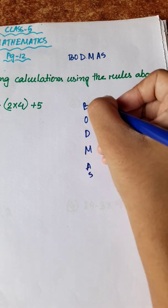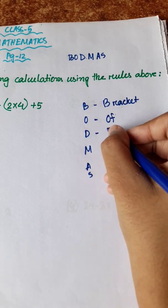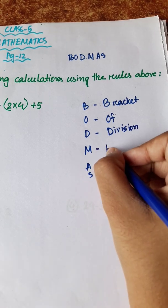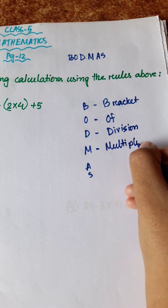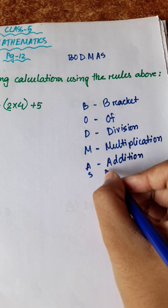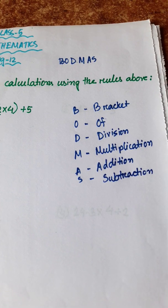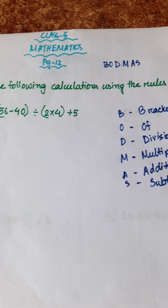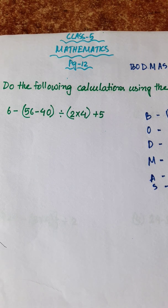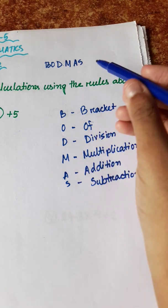The board math rule is BODMAS: Bracket, Of, Division, Multiplication, Addition, Subtraction. So it is basically a serial order. In this math, when we have 4 operational symbols and we are confused which one to do first, this BODMAS rule helps us.